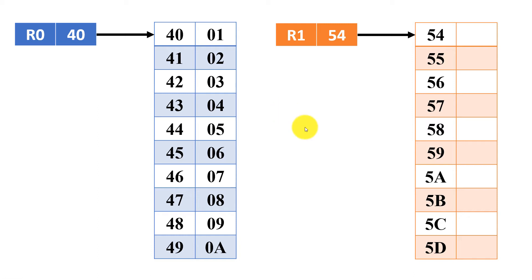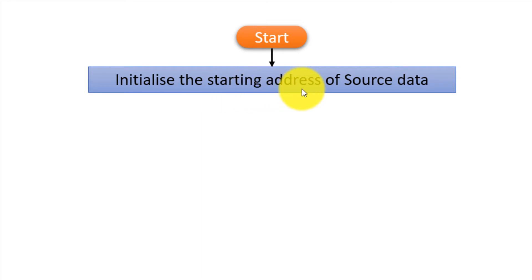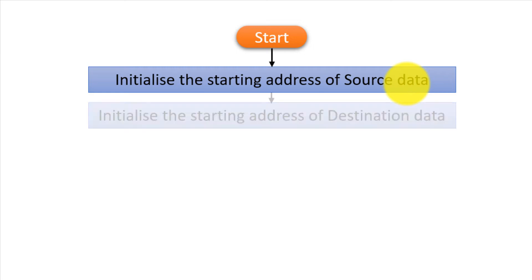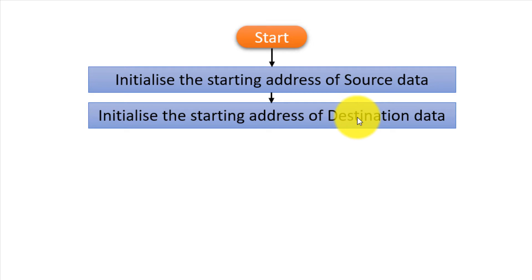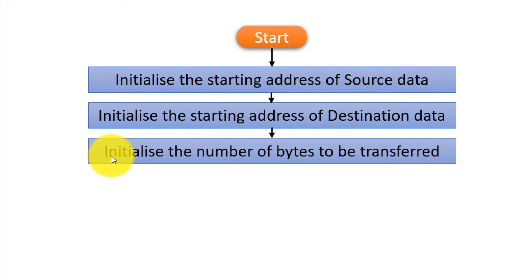Let us develop an algorithm and flow diagram for the program. The first step is to initialize the starting address of the source data — put 40h in one pointer. Then initialize the starting address of the destination data — so the destination pointer is also initialized. Then, importantly, initialize the number of bytes to be transferred.